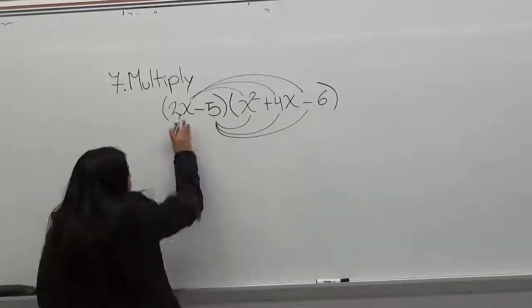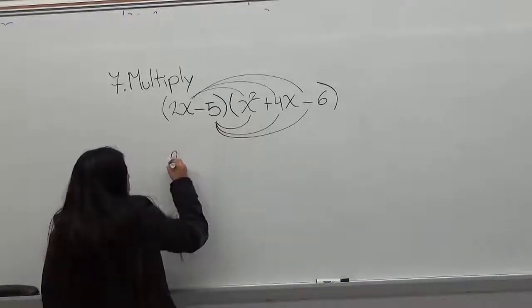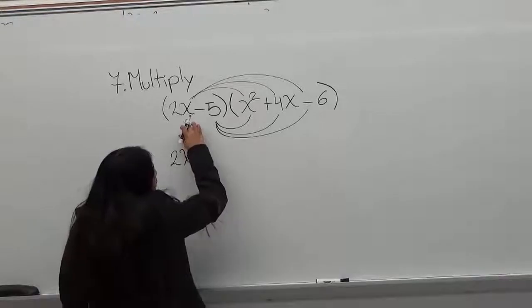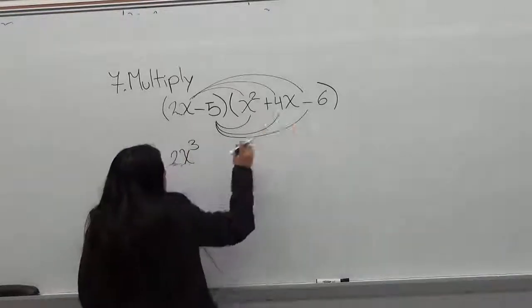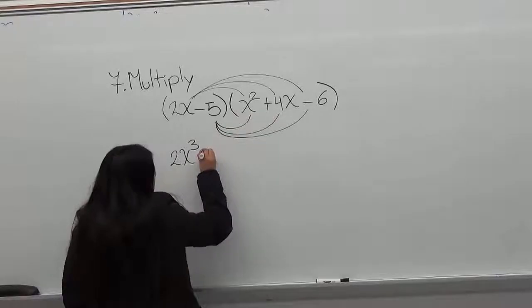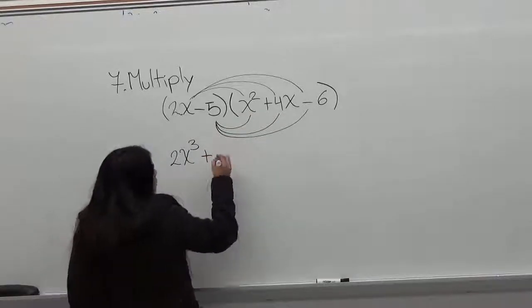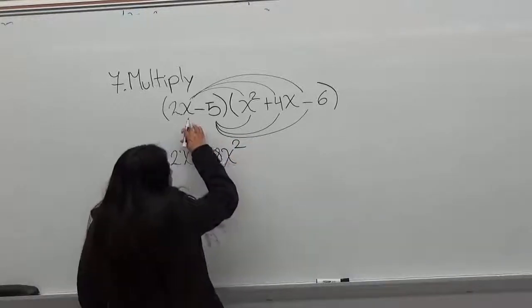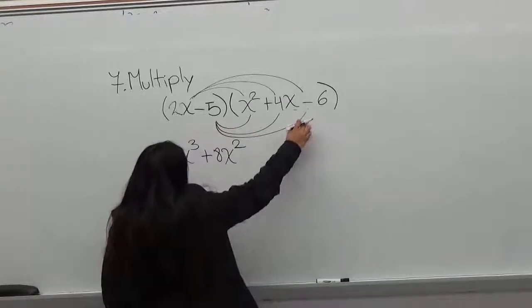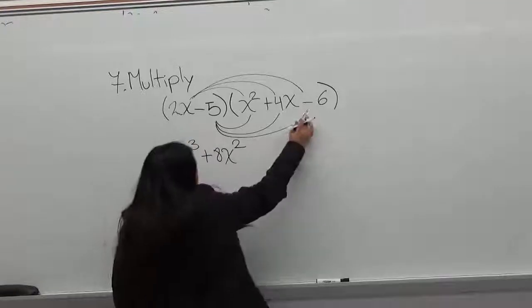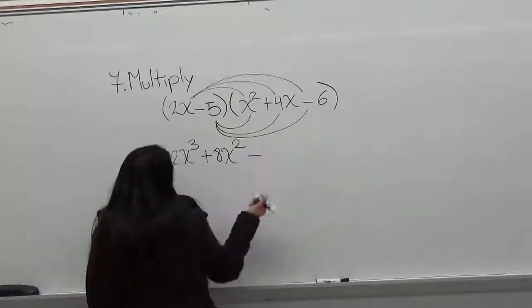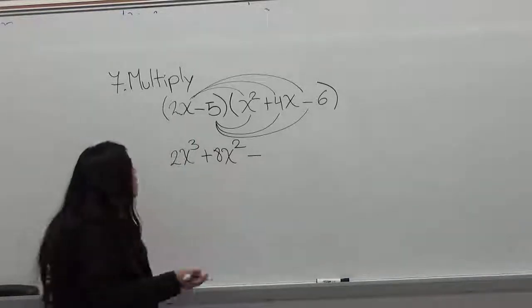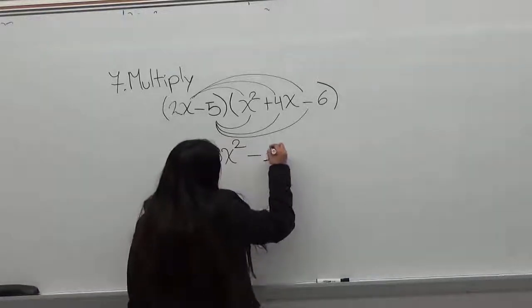So you have 2x times x squared, that is 2x cubed. Then you multiply 2x times 4x. Positive times positive is positive, so you have 8x squared. Then you multiply 2x times minus 6. Positive times negative gives a negative, so you have 2x times 6 is 12x.